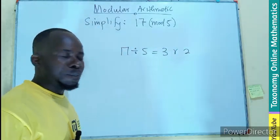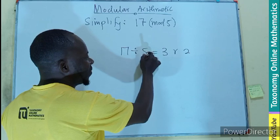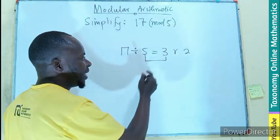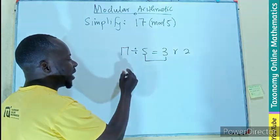How do we get a remainder? We multiply the divisor with the quotient. That will give us 15. Then we subtract the product from the dividend.